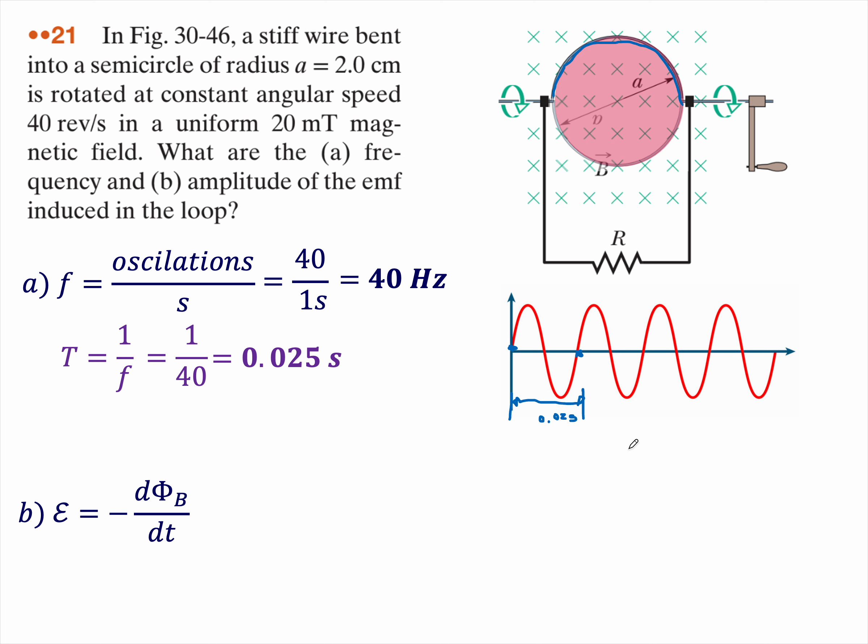To find the EMF produced, we're going to use the law of electromagnetic induction, which states the EMF produced is equal to the negative change in magnetic flux over time. In particular, I'm just going to look at the point that it goes from here to here, as the wire rotates around just once.